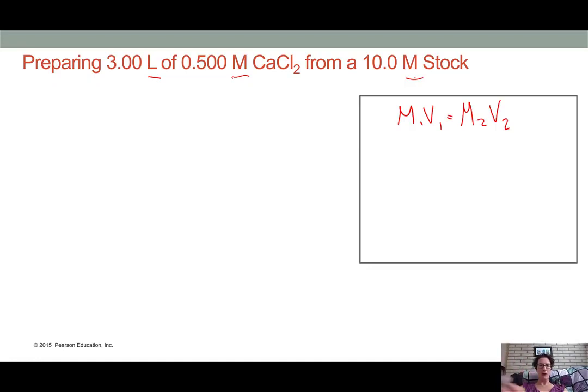Are these concentrations initial or final? Well reading the words we could say we want to prepare three liters. So that's what we're making. So that's our final. So the three liters is our V2, and it's three liters of 0.5 molar. So that is actually our M2.